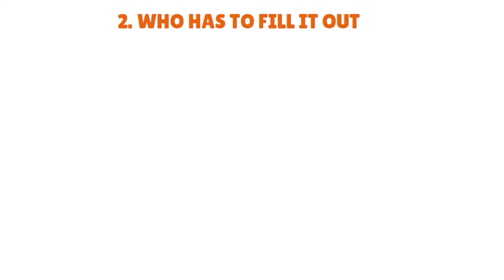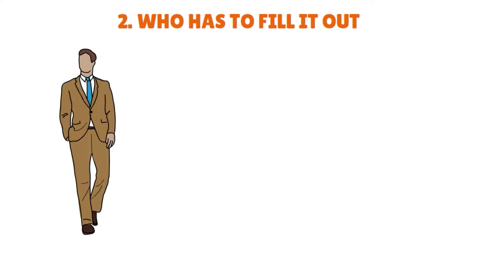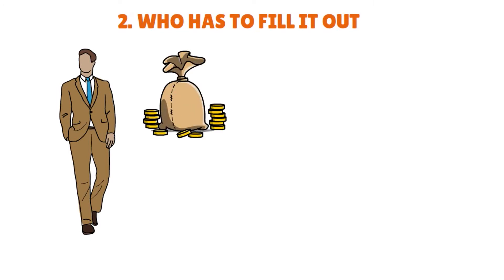W-9 forms are for self-employed workers like freelancers, independent contractors, and consultants. You need to use it if you have earned over $600 — that's the threshold — in a tax year without being hired as an employee. If your employer sends you a W-9 instead of a W-4, the company has likely classified you as an independent contractor.